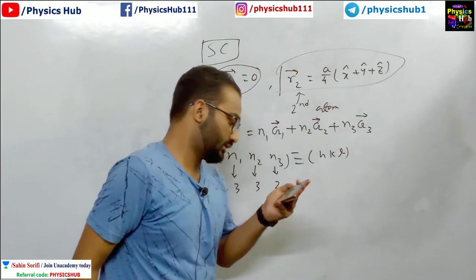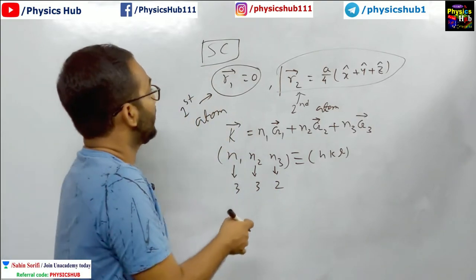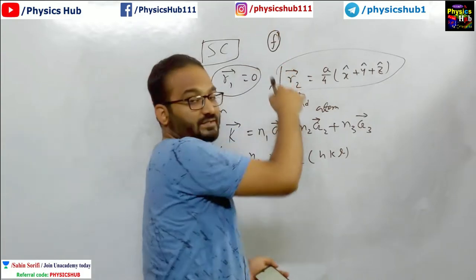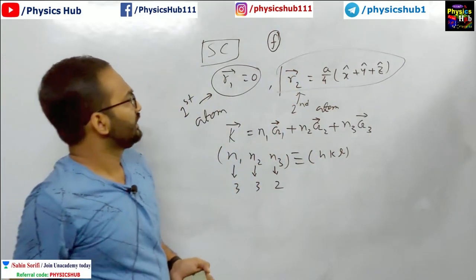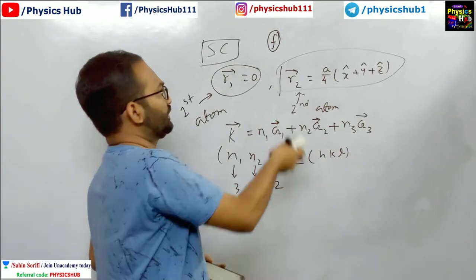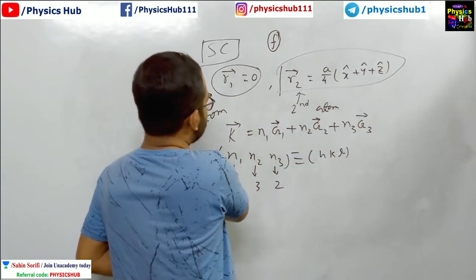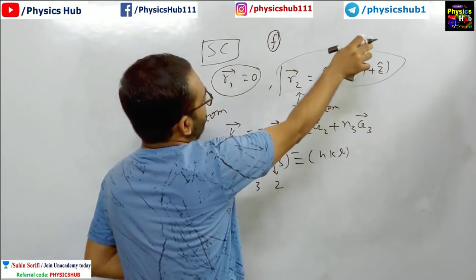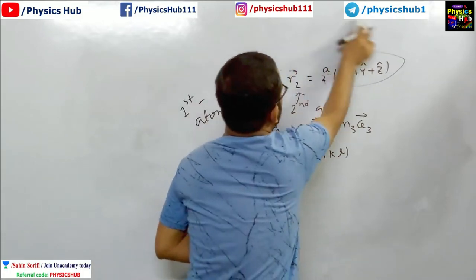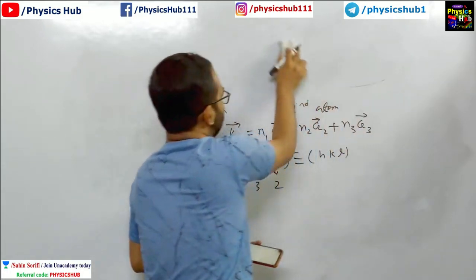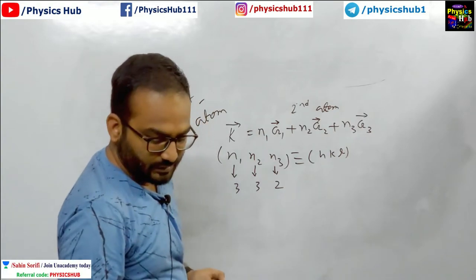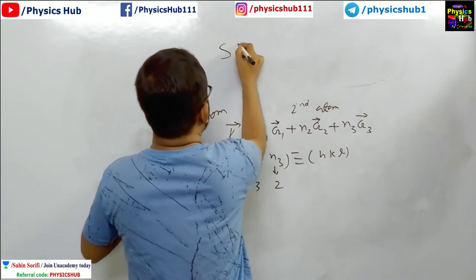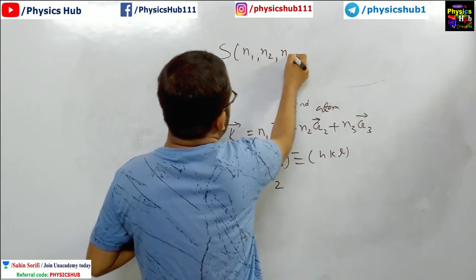Now you see there is no mention about the f factor or the atomic scattering factor. So for the time being, we can just ignore that. We can just take the value of f to be 1. So let us apply this here. Let us remember a/4 x̂ + ŷ + ẑ. Let us apply the formula of the structure factor.